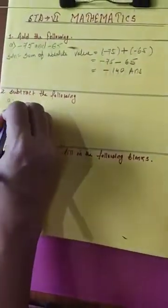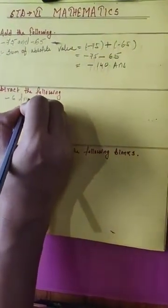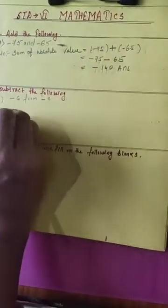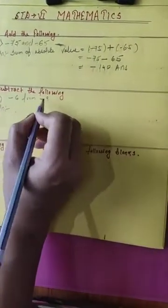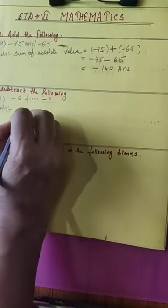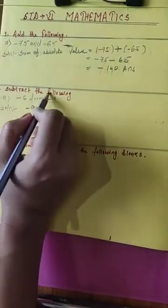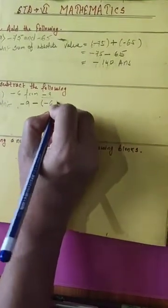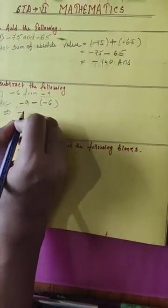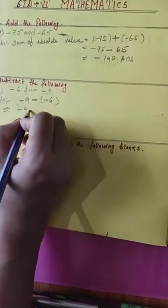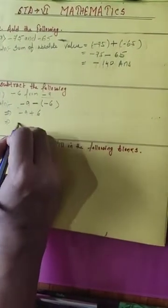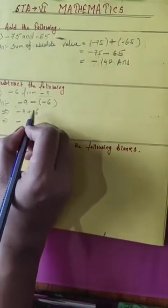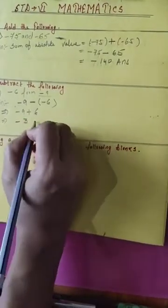The question is: minus 6 from minus 9. First write the right side because 'from' is given here: minus 9. The question says subtract, so write the subtract sign, then open the bracket and write minus 6. Minus minus becomes plus, but the sign will be minus. So 9 minus 6 equal to 3, and minus 3 is your answer.